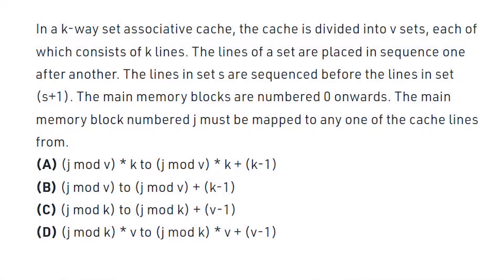In a k-way set associative cache, the cache is divided into v sets each of which consists of k lines. The lines of a set are placed in sequence one after another. The lines in set s are sequenced before the lines in set s plus one. The main memory blocks are numbered zero onwards. The main memory block numbered j must be mapped to any one of the cache lines from - you have these four options. Just analyze these options.